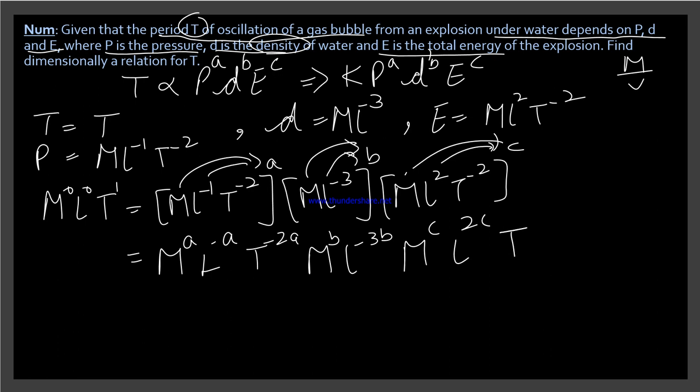Then again, M to the power c, L raised to power 2c, T raised to power minus 2c. Now when bases are the same, then powers are added. So M's power will be a plus b plus c. This is our M's power. Then after M, what comes? L.